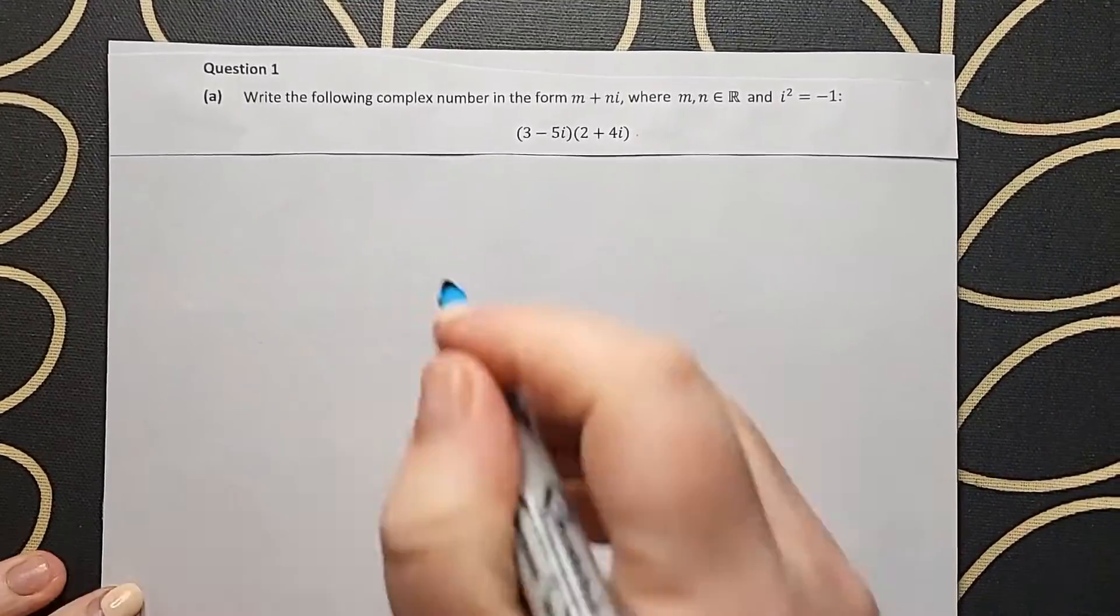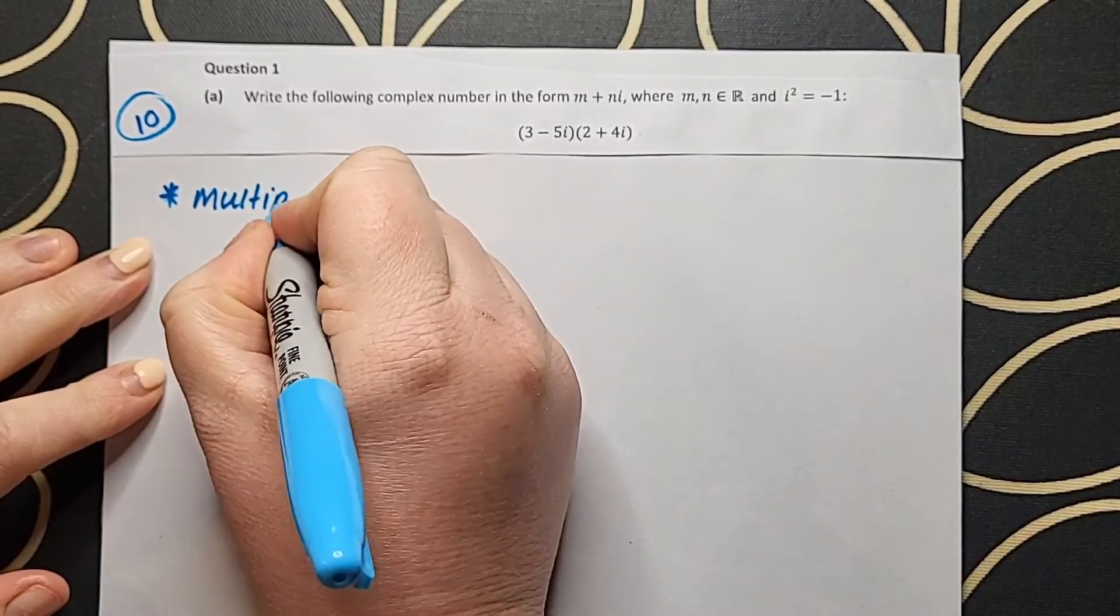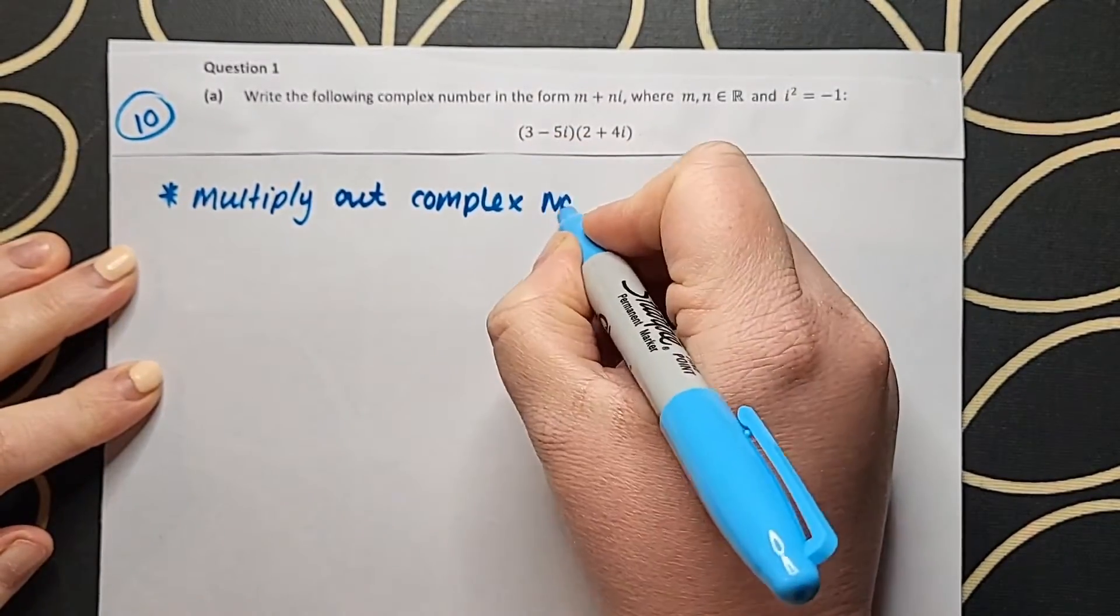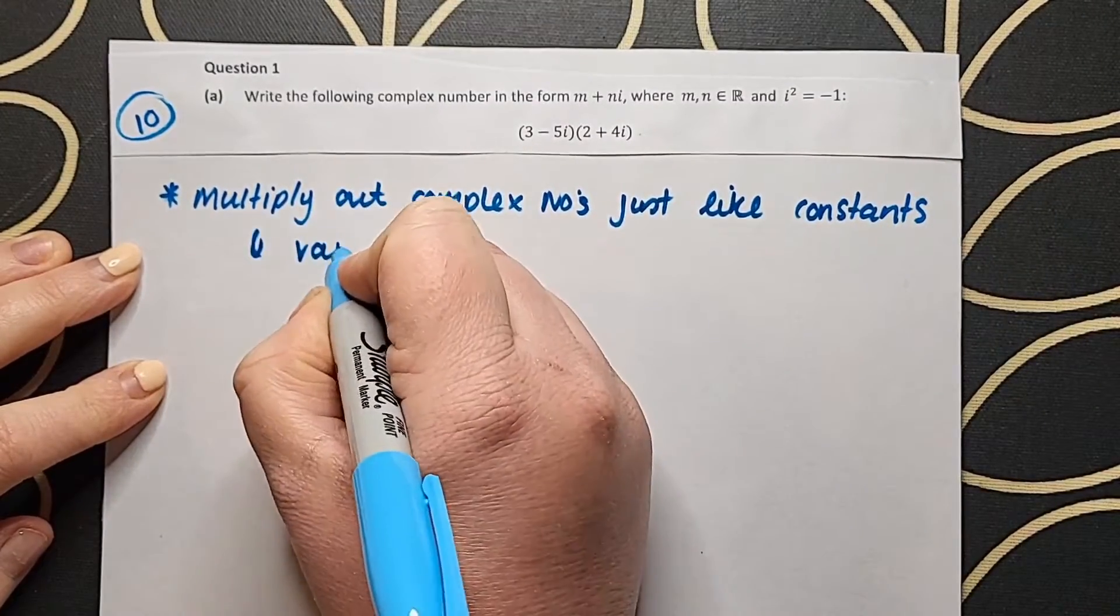Mrs. Nath Darlan here and let's look at question one from the 2022 Leaving Cert Higher Level paper one deferred paper. This part A is worth 10 marks and we are asked to multiply out these two complex numbers. A really nice starter question.